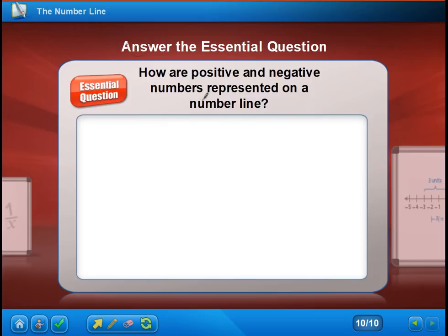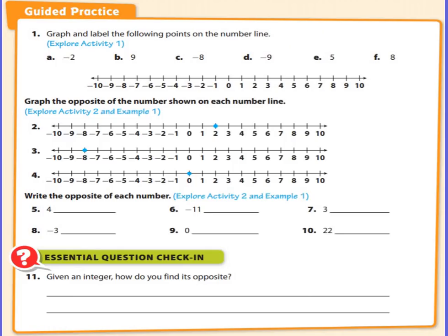The last step is to answer the essential question. I gave you space in your notes so you can work on that. The essential question is: how are positive and negative numbers represented on the number line? Your other piece is to do the guided practice — answer questions one through eleven on your own, and when you come back to class we will check your answers. As always, if you have any questions, that's it — bye.